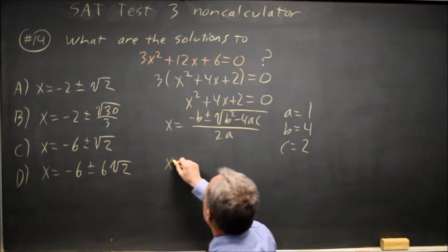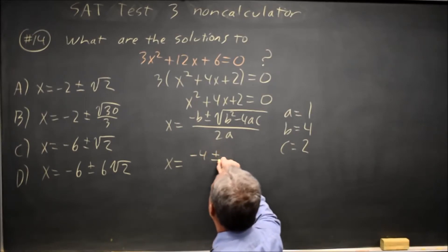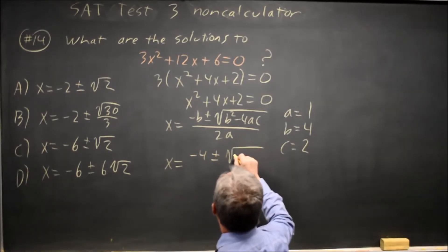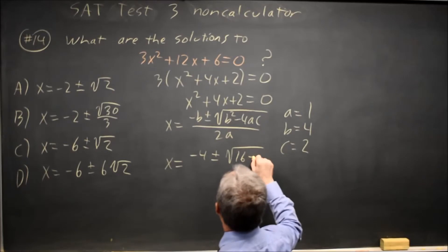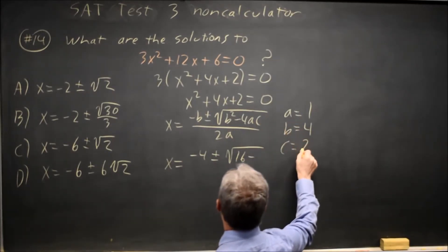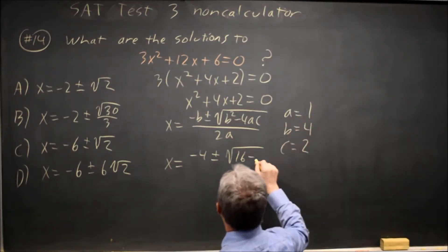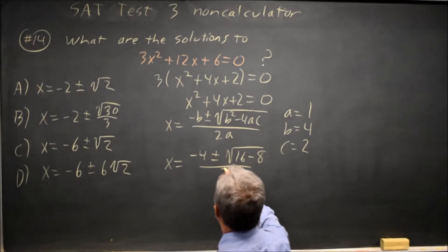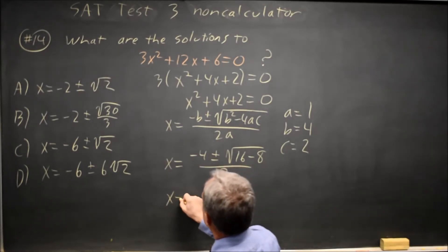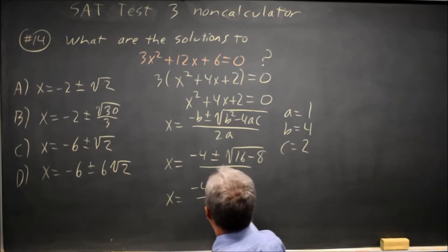So my x value is negative b, which is negative 4, plus or minus the square root of b squared is 4 squared is 16, minus 4ac is minus 4 times 2 is 8, times 1 is still minus 8, all over 2. So x equals negative 4 plus or minus root 8 over 2.